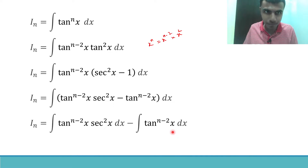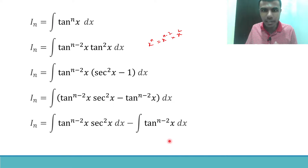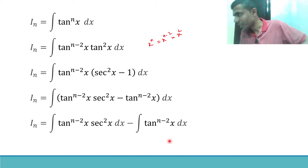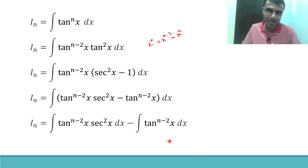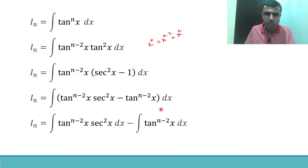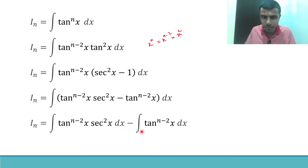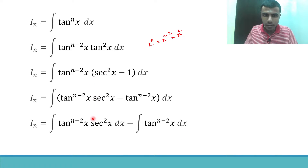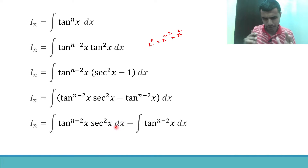A question to your audience: if the integral of tan^n x is I_n, what would the integral of tan^(n-2) x be? Krishna got the answer — it's I_(n-2). So the second integral is I_(n-2). Now next: the sec² x dx — I want to write it as the derivative of something.